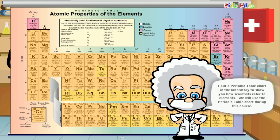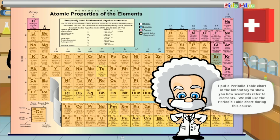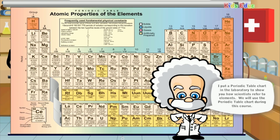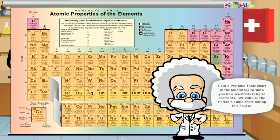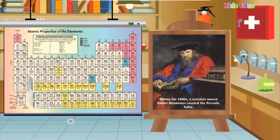I put a periodic table chart in the laboratory to show you how scientists refer to elements. We will use the periodic table chart during this course. During the 1800s, a scientist named Dimitri Mendeleev arranged names of chemical elements on a chart. He put the elements in groups of rows and columns on the chart to make it easier to find chemical properties of each element. He called that chart the periodic table.